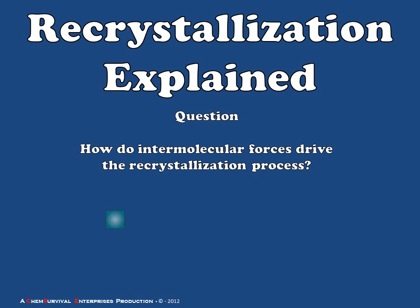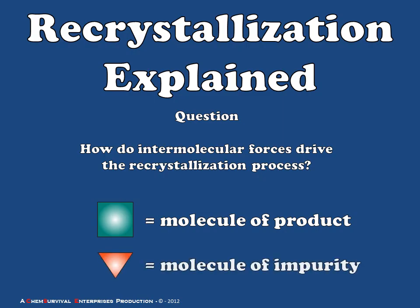And to do this, we're going to have to have a cast of characters, one of which will be molecules of the product of interest, and we'll be depicting those as green squares. And for the time being, we'll be thinking of impurity as a different type of shape. In this case, molecules of impurity will be depicted in some of these cartoon illustrations as red triangles. So let's take a look at how we can begin to understand the process of recrystallization using these very simple analogs for organic compounds.